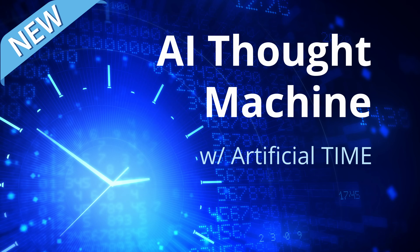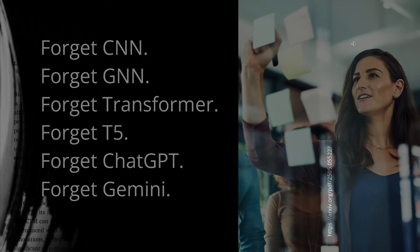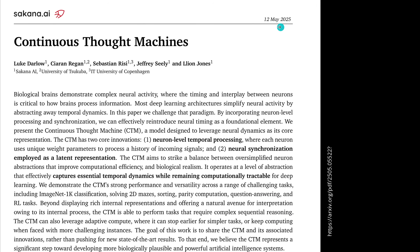Hello community, today we have something brand new: the Continuous Thought Machine. Forget about CNN, graph neural networks, transformers, T5, GPT, GVD, Gemini — we have a completely new system. Published May 12, 2025, this is a new publication by Sakana AI, and it is really something special — absolutely different from anything seen before.